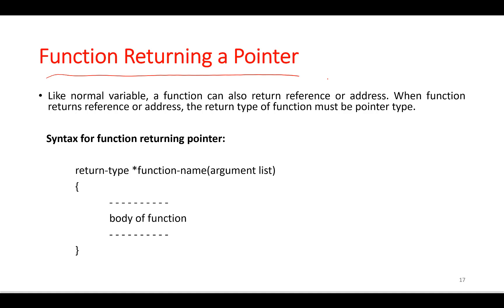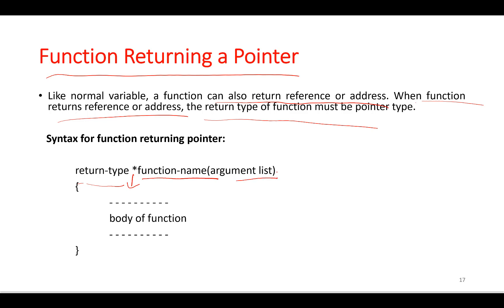Next is function returning a pointer. A function can return a pointer to the calling function. You must be careful because local variables of a function do not live outside the function — they have scope only inside it. If you return a pointer connected to a local variable, that pointer will point to nothing once the function ends. The syntax is: `return_type *function_name(argument_list) { body }`. The return type of the function must be a pointer.